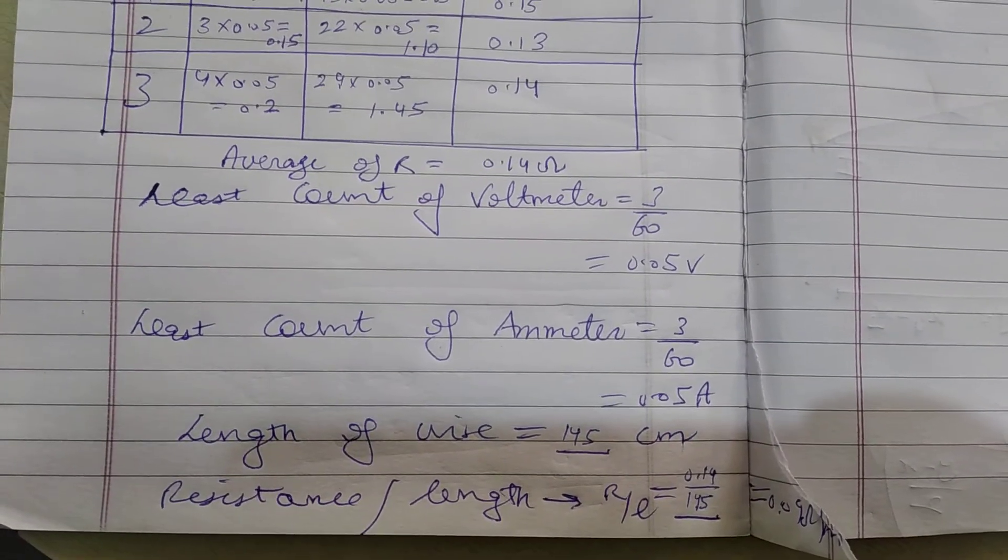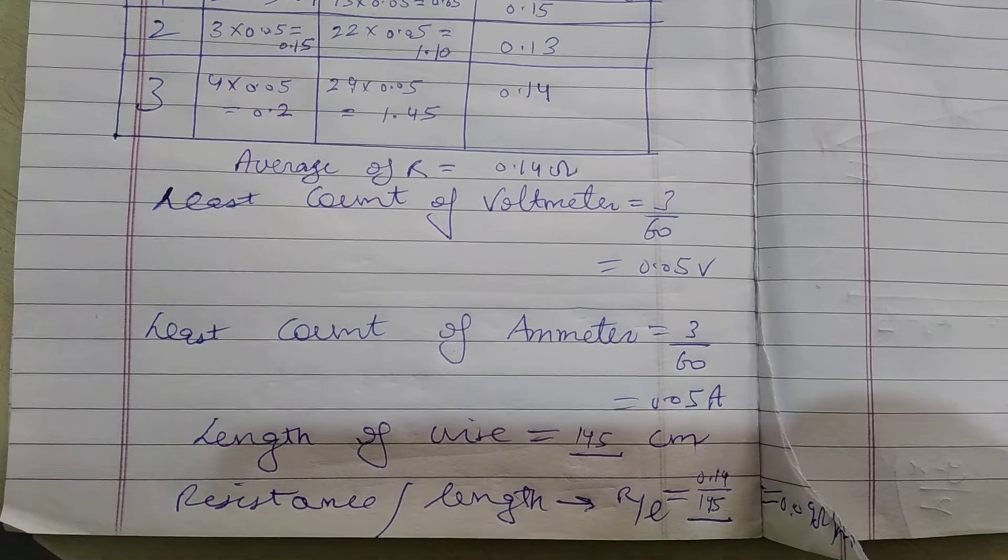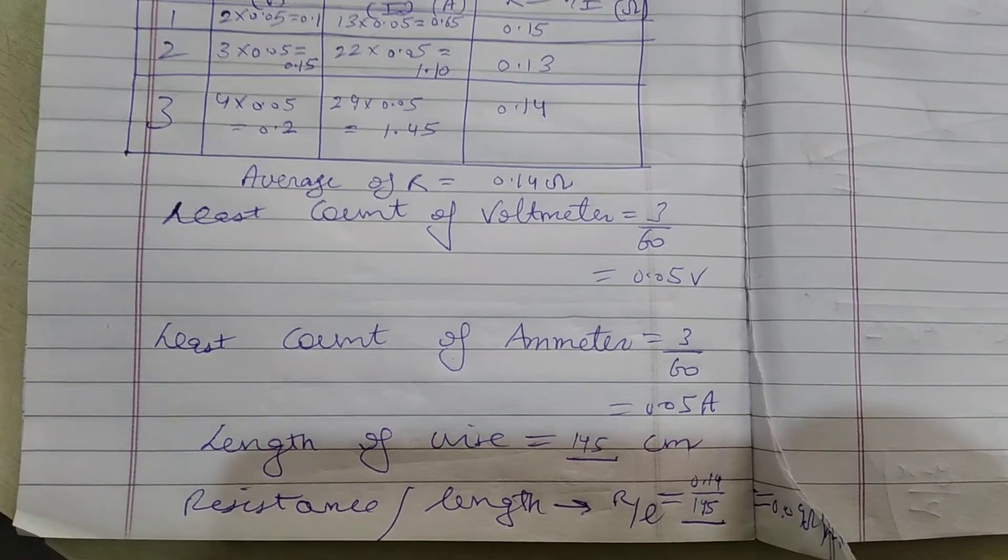So the resistance per unit length which is 0.14 ohm divided by 145 centimeter, that will give you 0.09 ohm per meter.